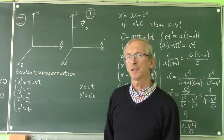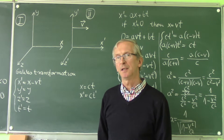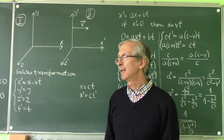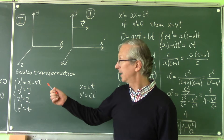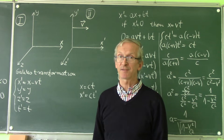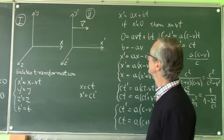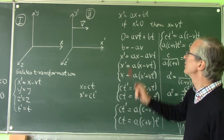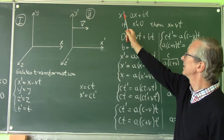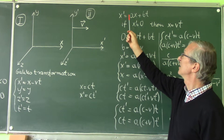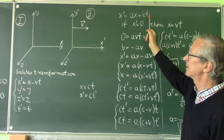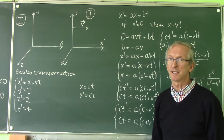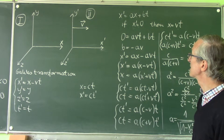We also know that the Lorentz transformation should reduce to the Galileo transformation for velocities much slower than the speed of light. So we foresee the form of the real transformation: x' depends on x and t linearly, where A and B are just constants that we need to calculate.